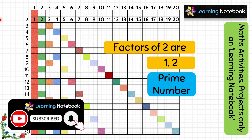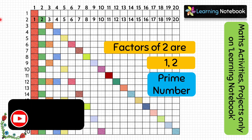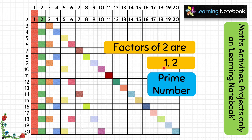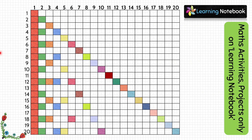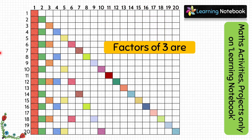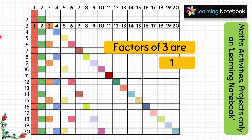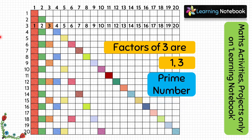A prime number has only 2 factors: 1 and the number itself. Now let us find factors of 3 — take a look at row 3. Boxes 1 and 3 are colored, so factors of 3 are 1 and 3. Again, since we have only 2 colored boxes, number 3 is a prime number.